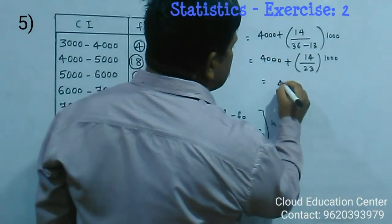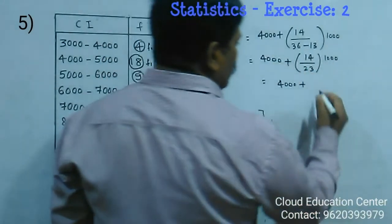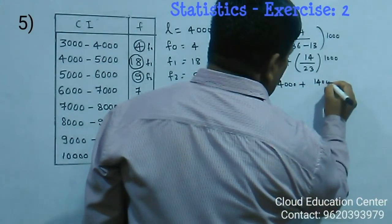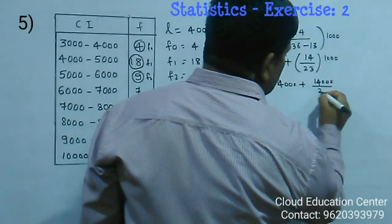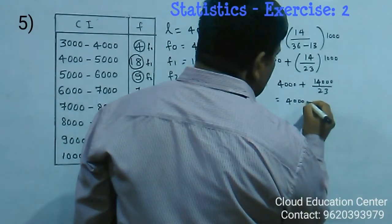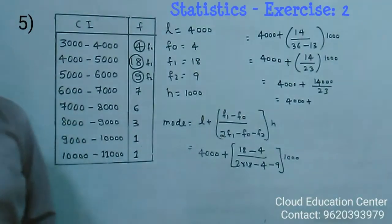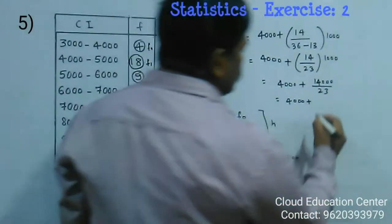Now it is 4000 plus 14 into 1000 is 14000 divided by 23. It is 4000 plus. Student, come on, divide the 14000 by 23, 608.7.